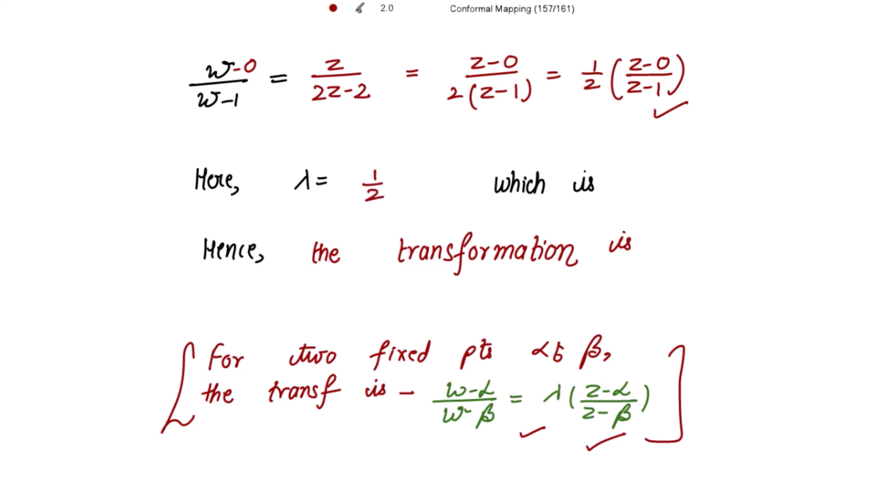We have found that λ = 1/2, which is real and positive. Whenever λ is real and positive, the type of transformation is hyperbolic.